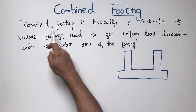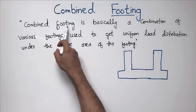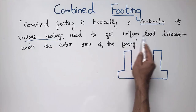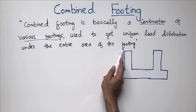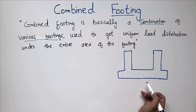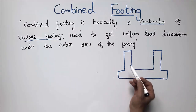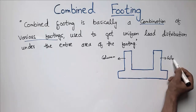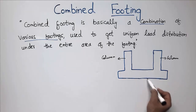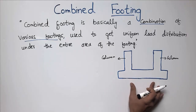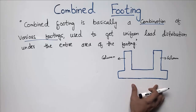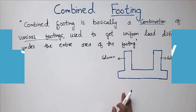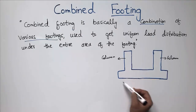Combined footing can be defined as a combination of various footings used to get a uniform load distribution over the entire area of the footing. As you can see in this figure, there is one column and another column, and both column footings have been joined together in order to transfer the load uniformly over the entire area of the footing. That is why we combine the footings together.